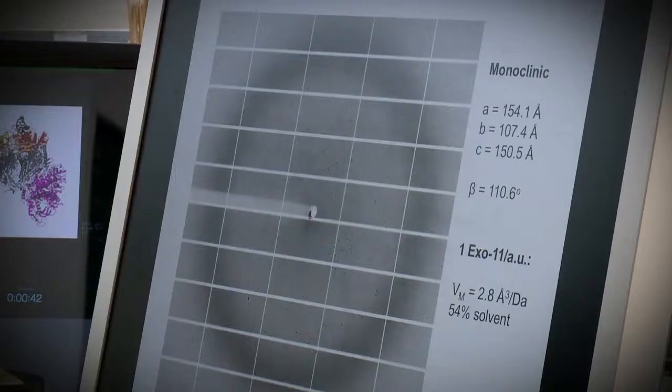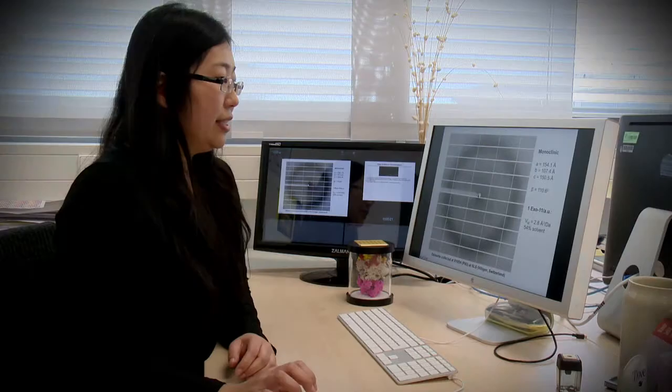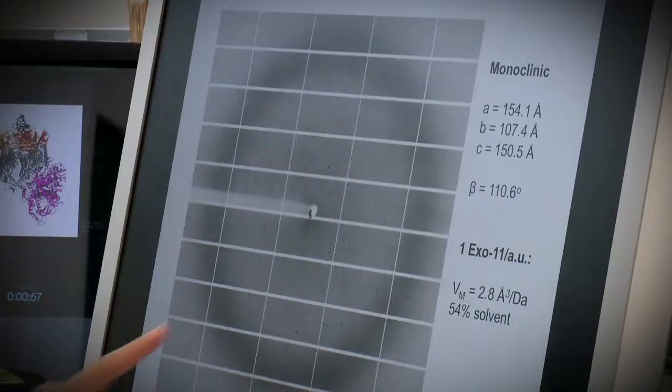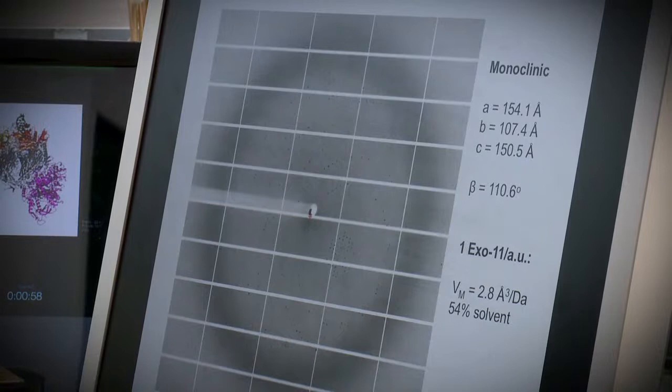And then we collect these images like this with these dots. So this is the reciprocal space, which means it's the Fourier transform of a crystal containing the protein of interest. From this information, we determine the structure in the computer.